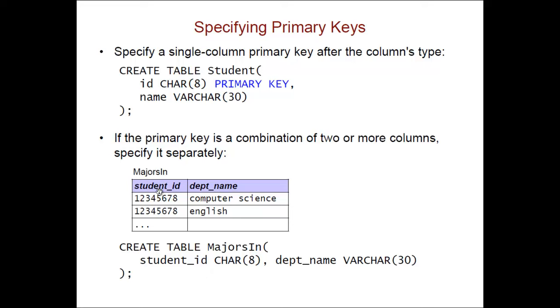So if you remember MajorsIn had the combination of student_id and department name as its primary key. So here is the CREATE TABLE where we just specify the names and types of the columns. But then we would put an additional comma and then we would say PRIMARY KEY and in parentheses the combination of columns that makes up that primary key.